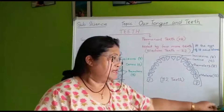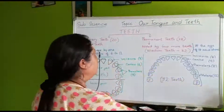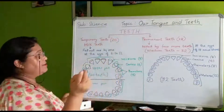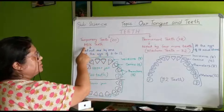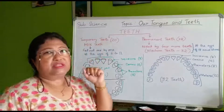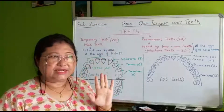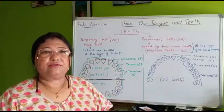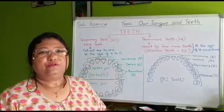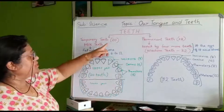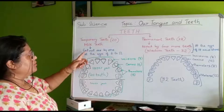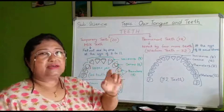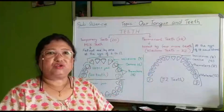We have two types of teeth. One is temporary teeth, also known as milk teeth. All together we have 20 milk teeth. When a baby or child reaches the age of six, seven, or eight, these teeth start to fall out one by one between the ages of 6 to 12.